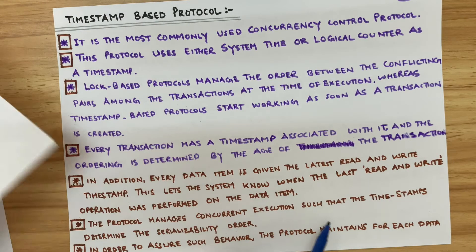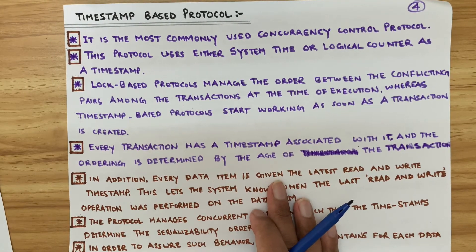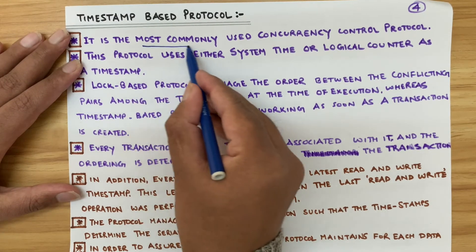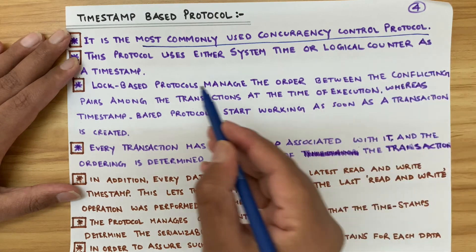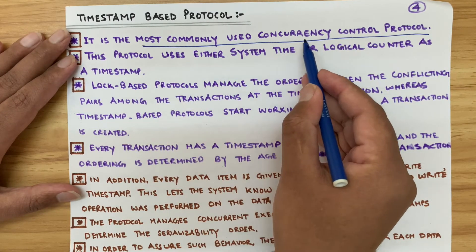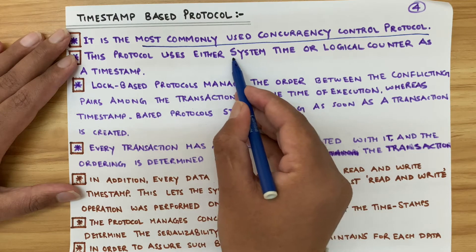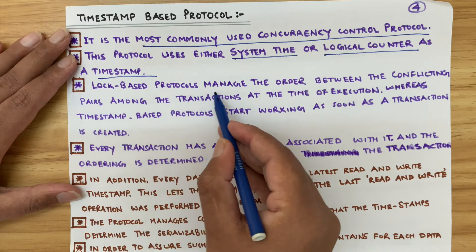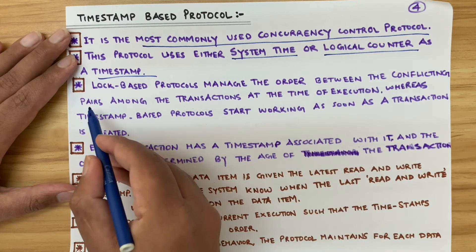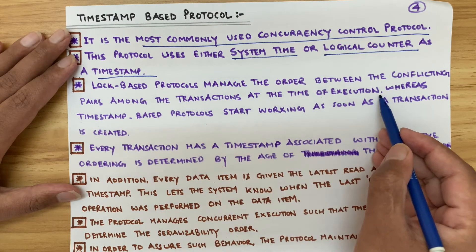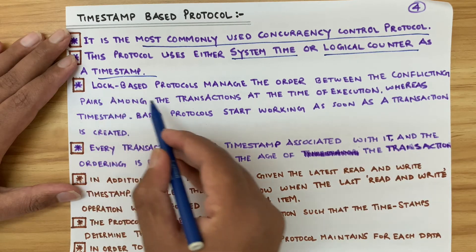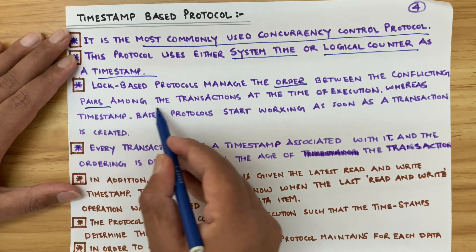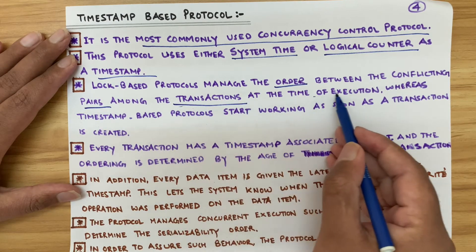Next: timestamp-based protocol. Timestamp-based protocol is the most commonly used concurrency control protocol. It uses either system time or a logical counter as a timestamp. Lock-based protocols manage the order between the conflicting pairs among the transactions at the time of execution.